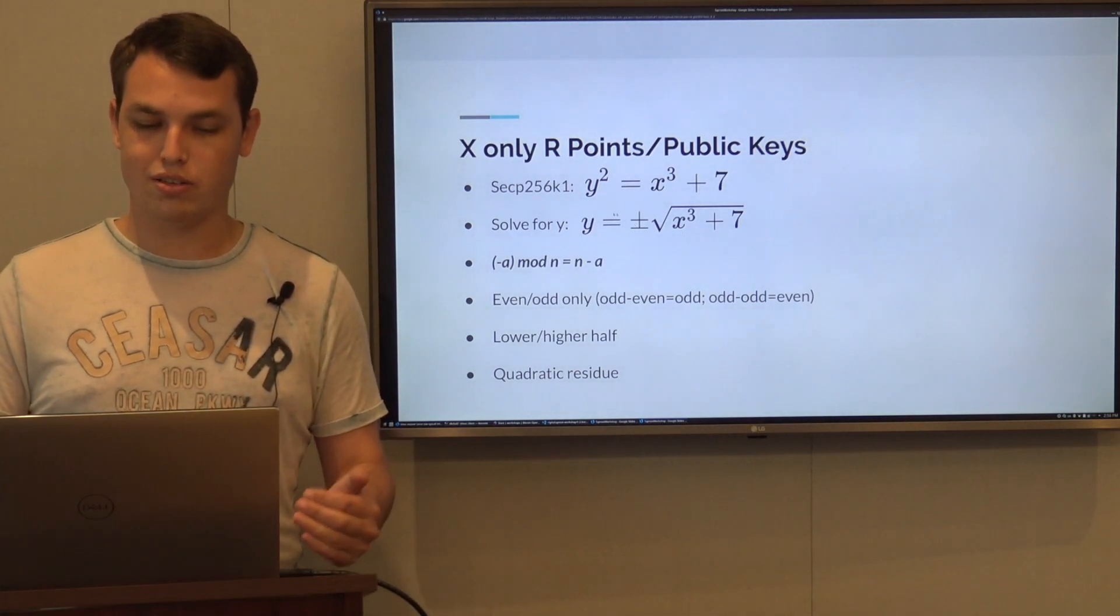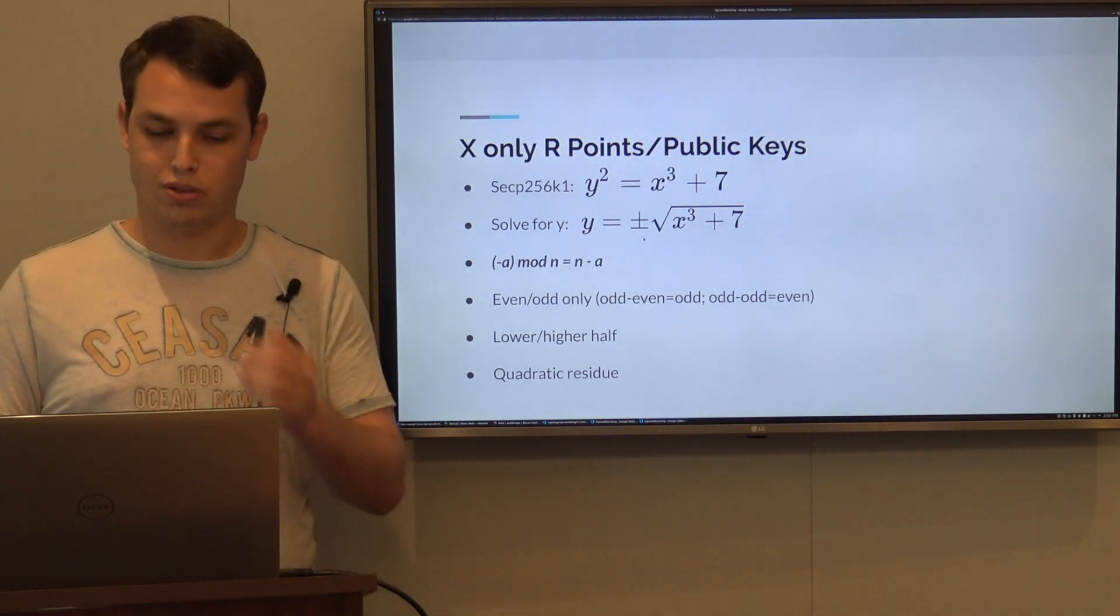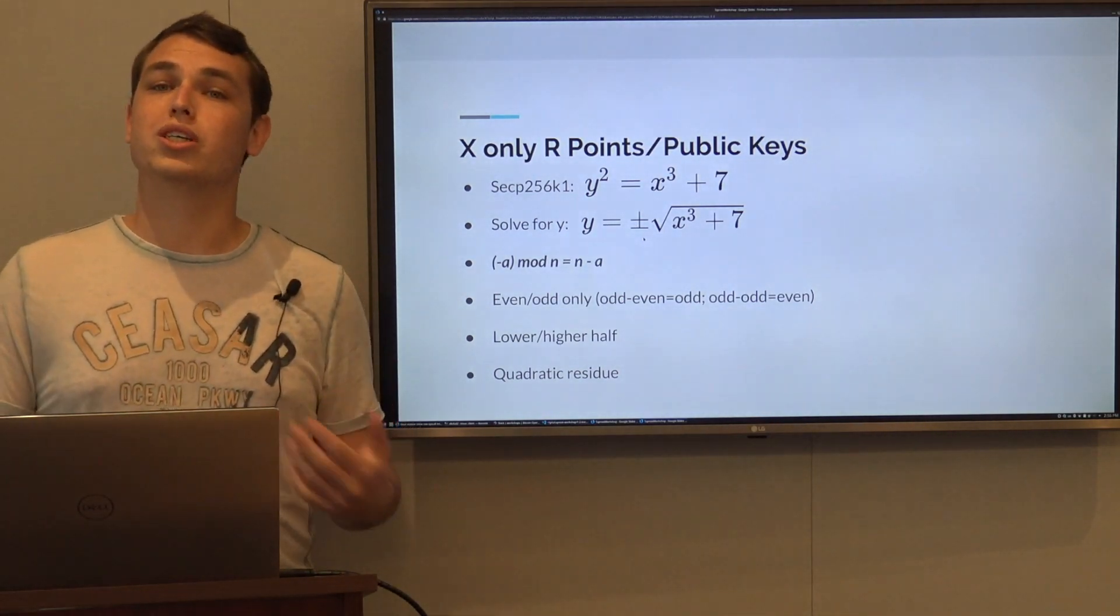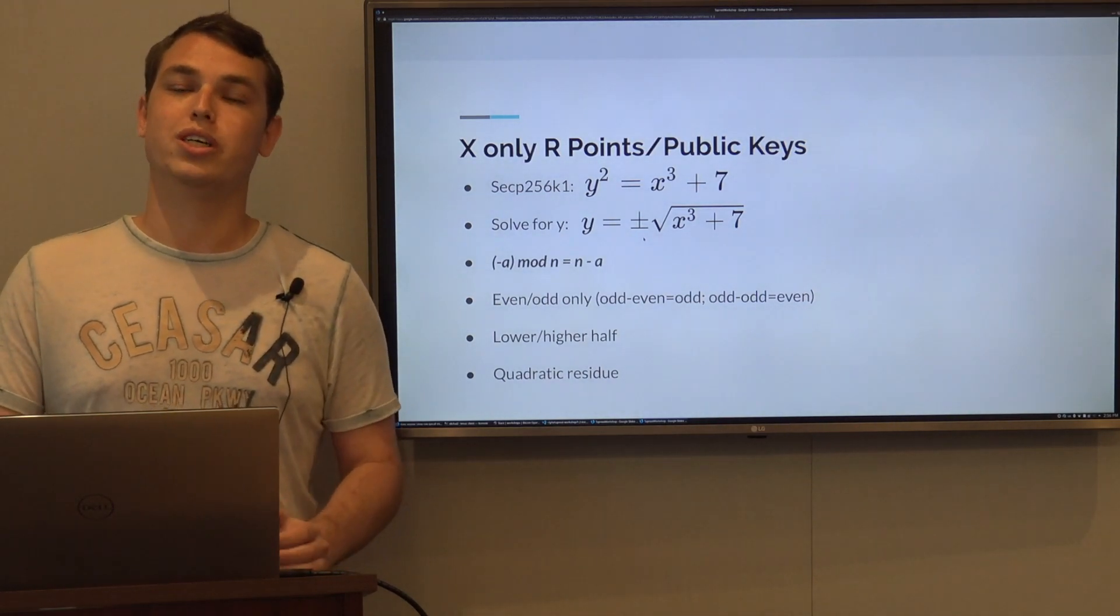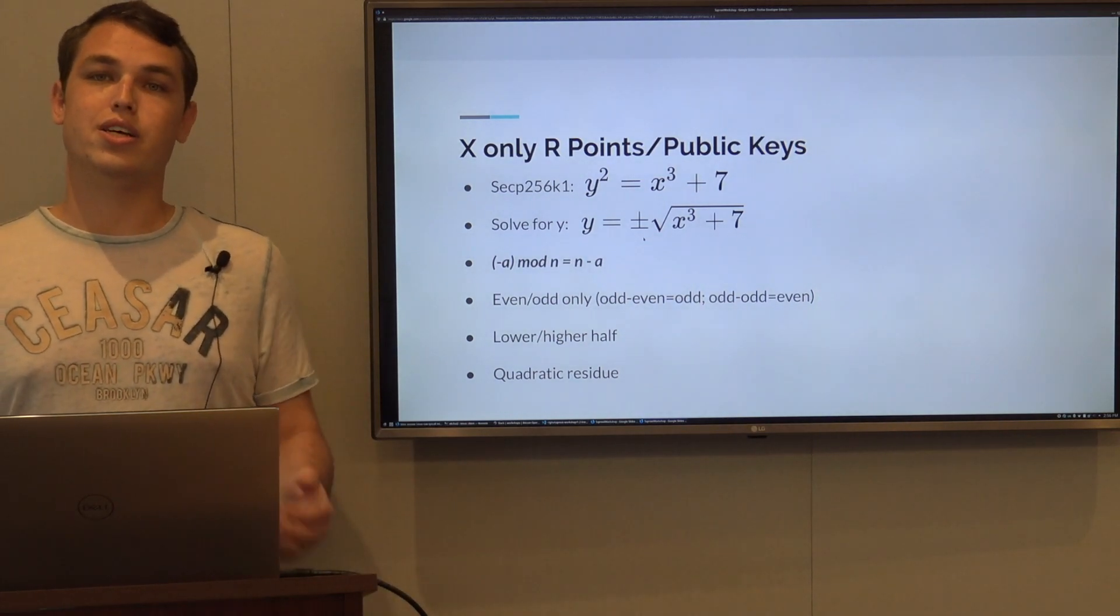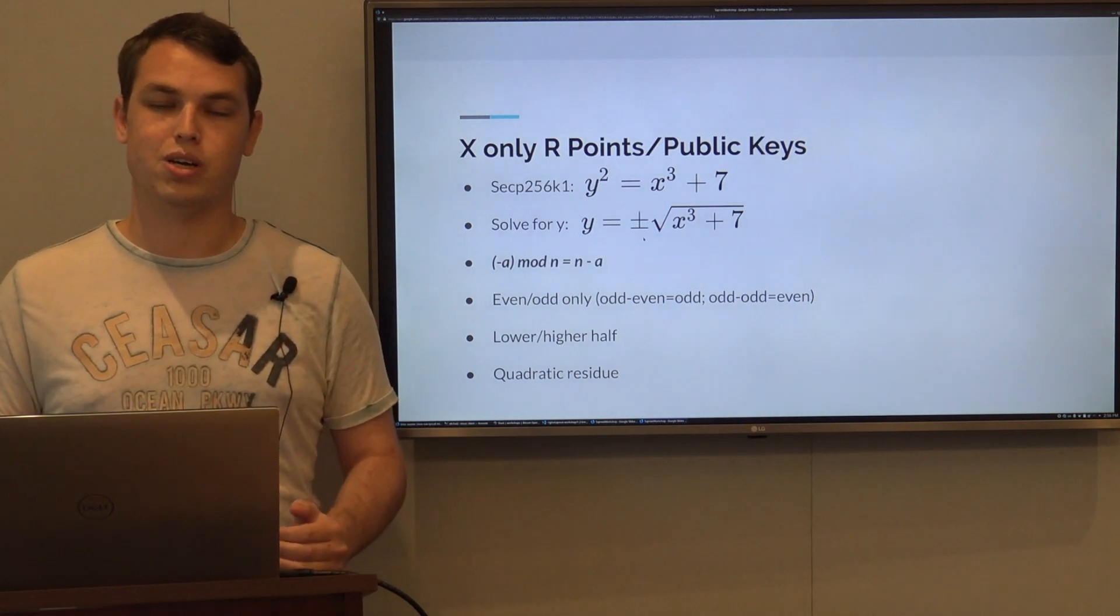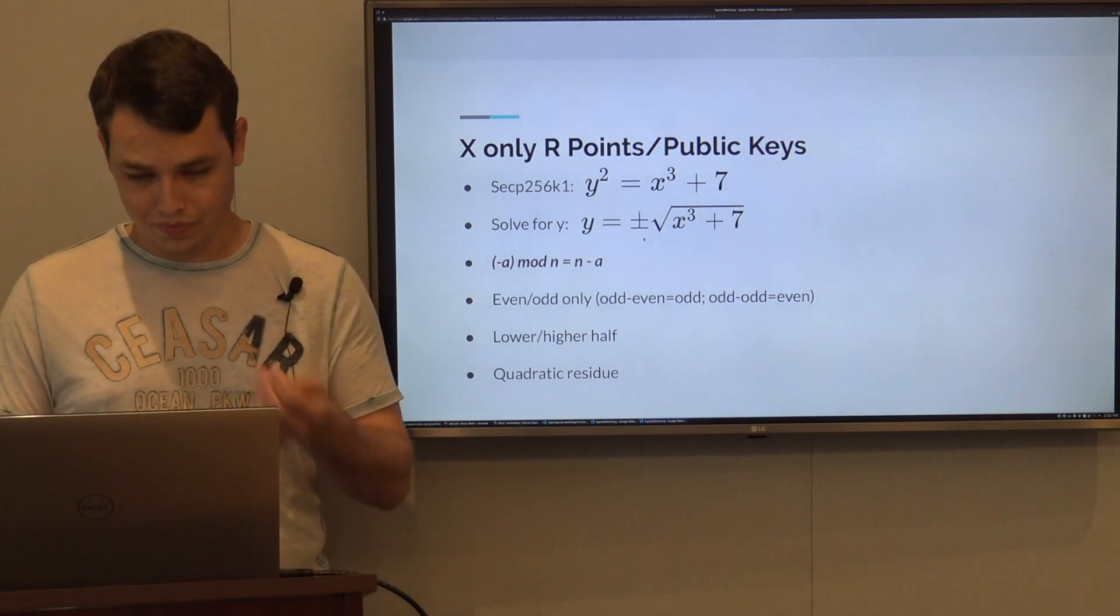For every x there are two y's - one is plus and the other is minus, that's how square roots work. If we can somehow find a way that we implicitly say which is the correct y, then we can send only the x, solve and get the correct y, and save 32 bytes. There's three ways we know to do it.